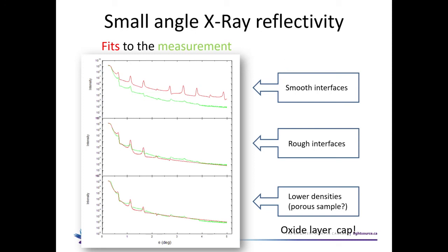You get your measurement and then bring a model — first a very rough model — trying to improve it to make it closer to your sample. In this example, the fit is the red curve and here's the measurement. I can get the periodicity using the formula for D, but if it's not matching I go to the second iteration and maybe add some roughness to the interfaces. In the third iteration, maybe I change the density or add an oxide cap layer. Bit by bit you adjust your model until simulation and measurement have closer resemblance.